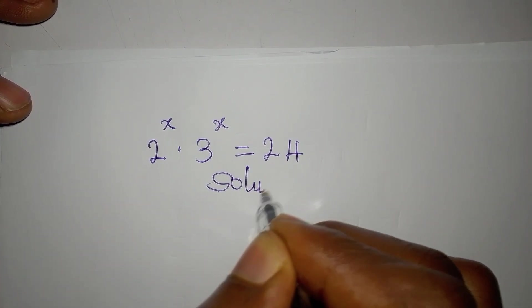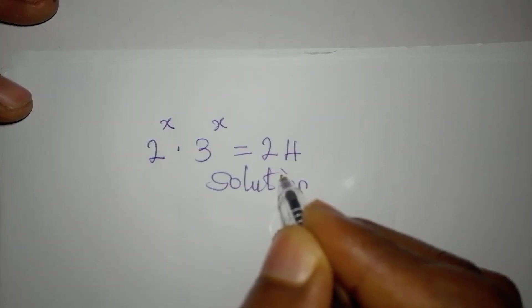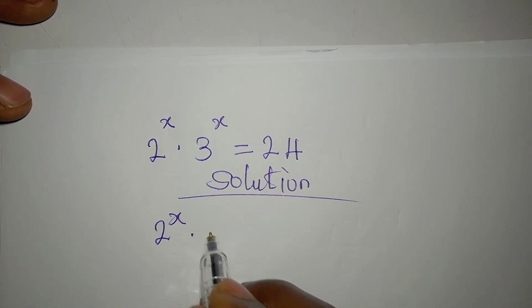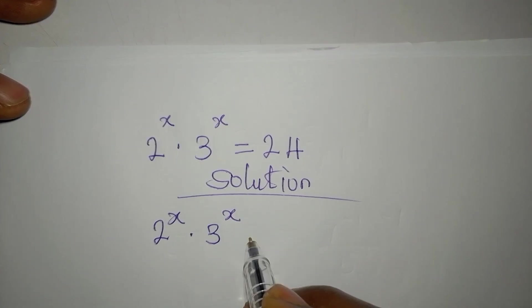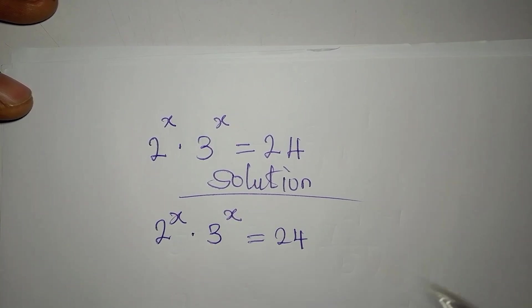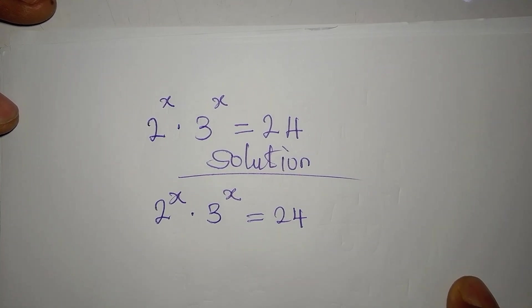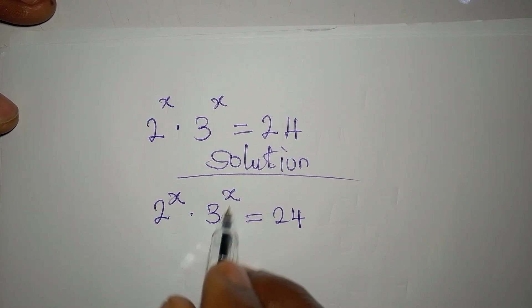Hi everyone, let's provide the solution to this problem: 2 to the power of x multiplied by 3 to the power of x equals 24. This is simple if you know how to break it down. The bases are different, the powers are the same, so we can just combine the bases, multiply the bases, then raise them to the same power.